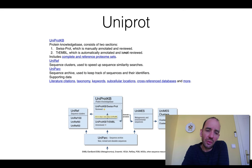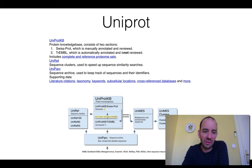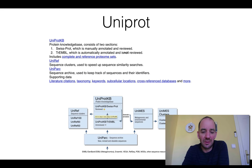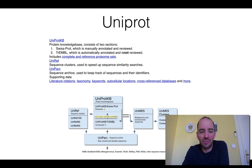UniProt also includes reference datasets and proteome datasets. UniRef provides sequence clusters: UniRef100 contains one cluster per group of identical sequences, while UniRef90 groups together all proteins that are 90 percent or more identical, and so on.